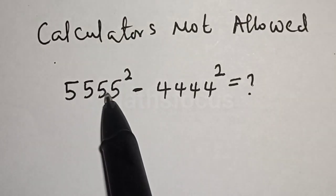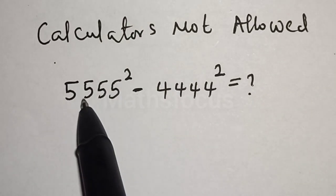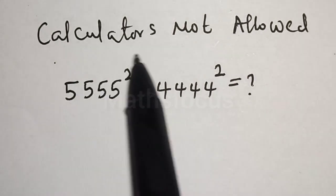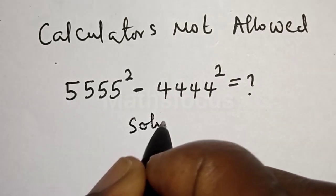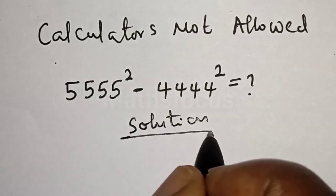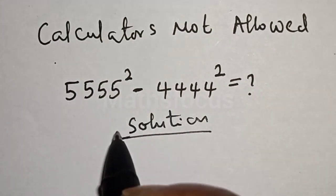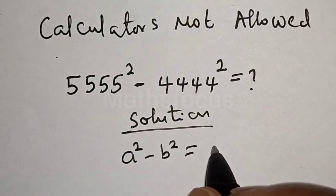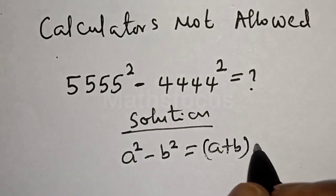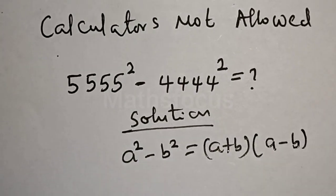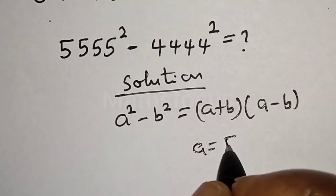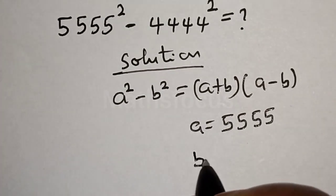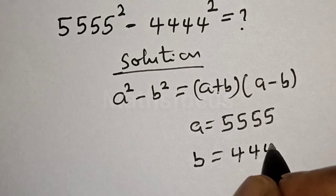Hi everyone, I quickly want to simplify this nice math problem: 5555 squared minus 4444 squared is equal to what — calculator not allowed. Looking at this, it is in the form a squared minus b squared, which equals a plus b multiplied by a minus b. Here, a is equal to 5555 and b is equal to 4444.